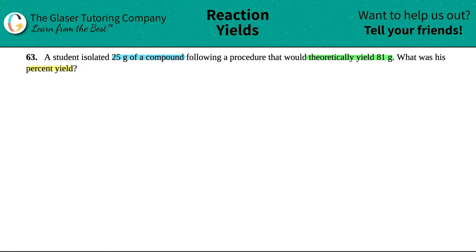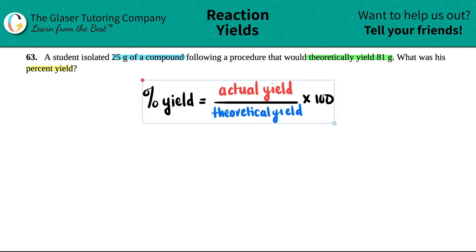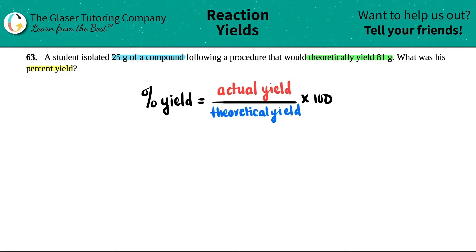We like to do the percent yield formula. It's basically just a percent formula. So percent yield equals the actual yield divided by the theoretical yield times 100. You could think of this as part divided by whole, because that's what a percent is.